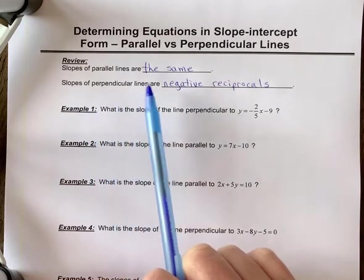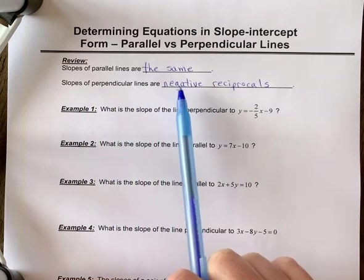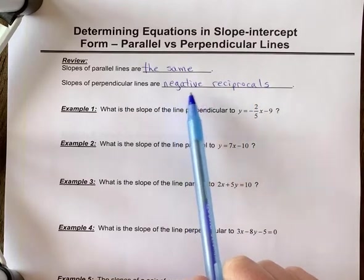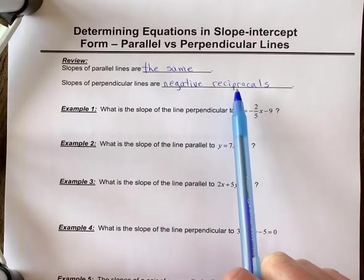Slopes of perpendicular lines, so lines that are at right angles, are going to have negative reciprocal slopes. So the signs will be opposite and the numbers will be reciprocals.